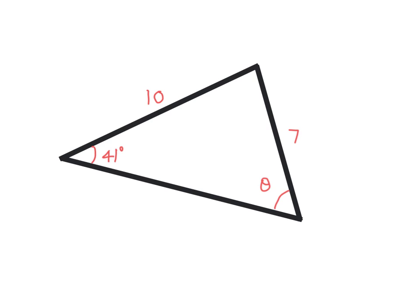There's a question here. We're going to try to find the angle theta. We know by the law of sines, 7 divided by sine 41 equals 10 over sine theta.